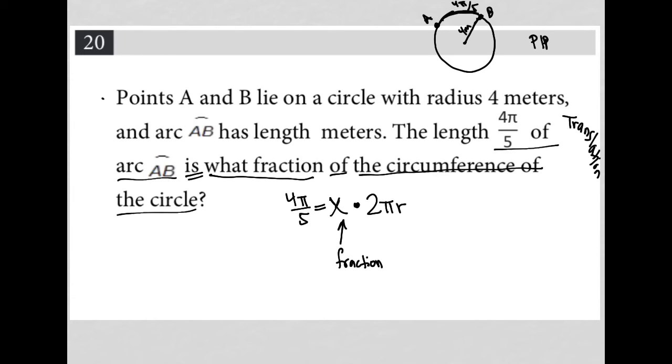Now, the circumference of our circle, because we do know the radius equals 4, means that we can convert this equation to 4π over 5 equals X times 8π. Because 2π times 4 is 8π.